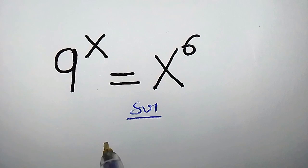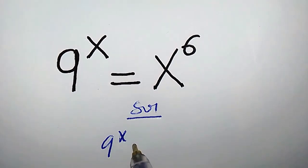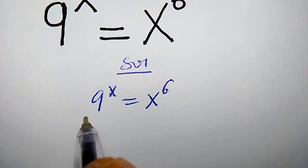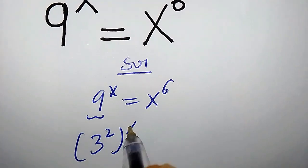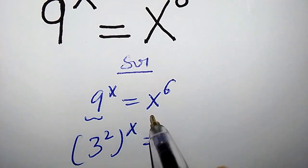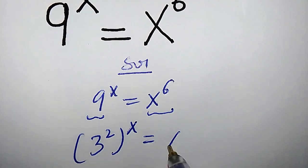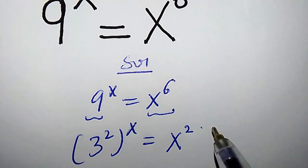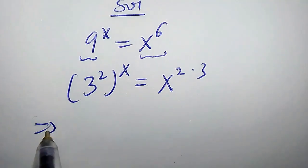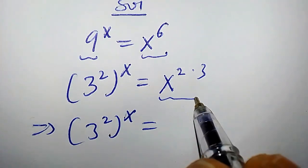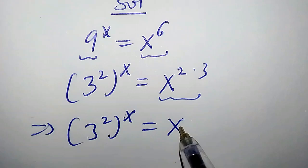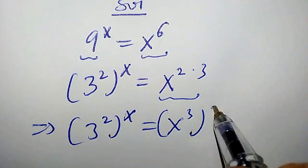Solution. We have 9 to the power of x equals x to the power of 6. We can rewrite 9 as 3 to the power of 2 times x. x to the power of 6 is the same thing as x to the power of 2 times 3. This implies that 3 to the power of 2 times x equals x to the power of 3 times 2.